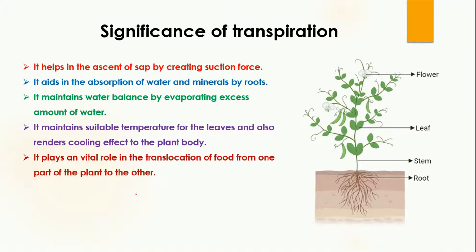Another significance of transpiration is that it plays a vital role in the translocation of food from one part of the plant to another. For example, food is prepared in the leaf, and the transpiration pull helps in the movement of water upward. This food also moves upward and may reach other parts such as the stem, which receives the food it requires through the process of transpiration.